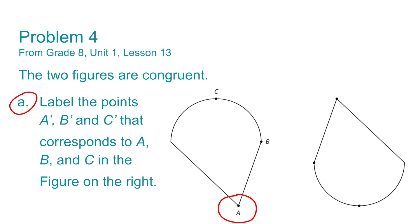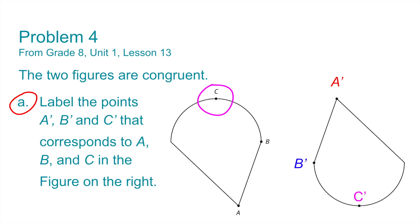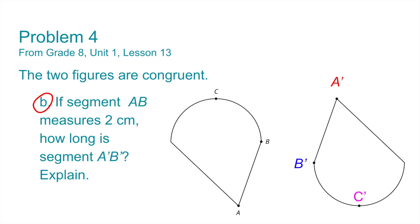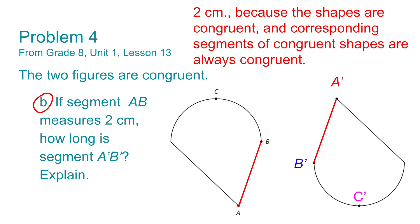Number 4. The two figures are congruent. Part A: label the points A prime, B prime, and C prime that correspond to A, B, and C in the figure on the right. Point A corresponds to A prime, point B corresponds to B prime, and point C corresponds to C prime. Part B: if segment AB measures two centimeters, how long is segment A prime B prime? Two centimeters, because the shapes are congruent and corresponding segments of congruent shapes are always congruent.